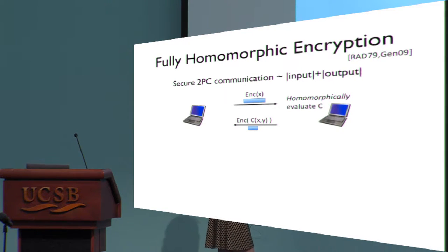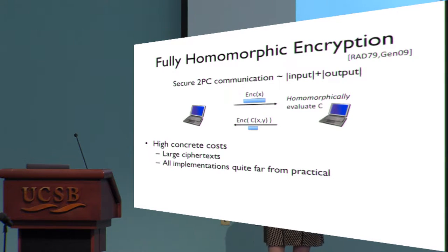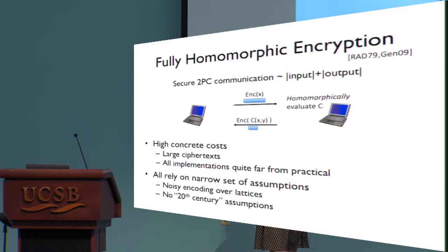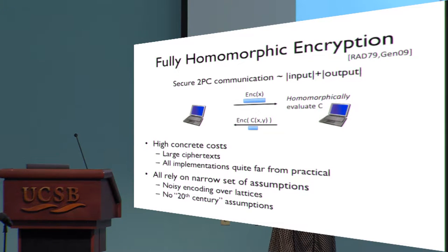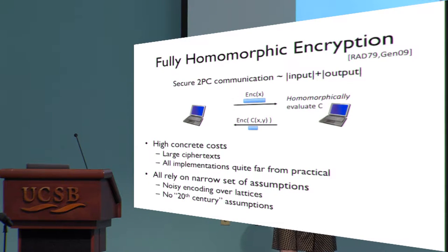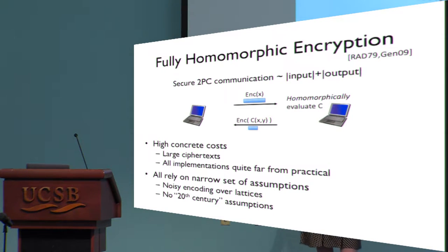Fully homomorphic encryption is also non-ideal in certain different ways. Even though we get great asymptotics, concretely these have very heavy machinery and high concrete costs. In addition, despite a lot of work and many different candidates over the years, essentially all of them rely on the same class of assumptions, boiling down to some sort of noisy encoding over lattices — and there are no candidates to date based on standard 20th century assumptions.